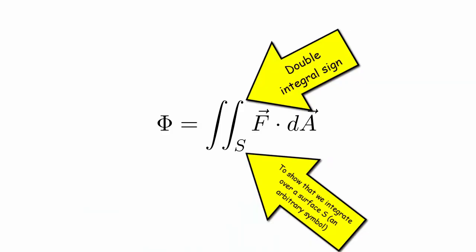To be mathematically correct, we actually write two integral signs, because we're integrating over an area which requires two variables. These are hand-wavy arguments and there are more rigorous ways to explain it.